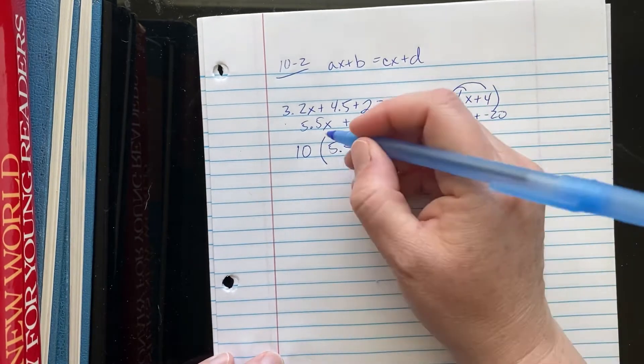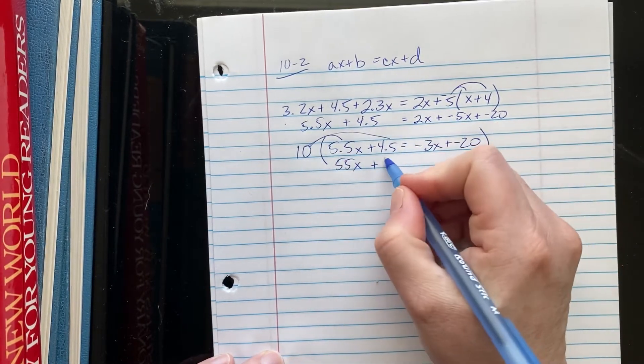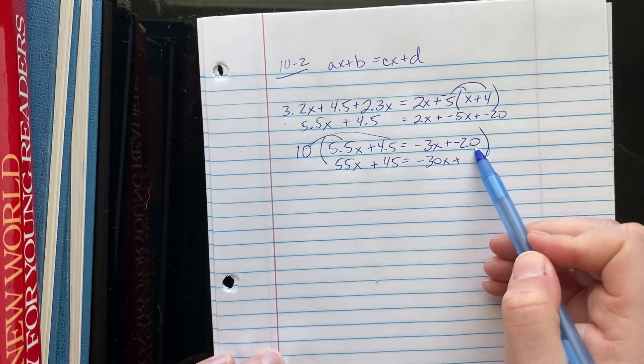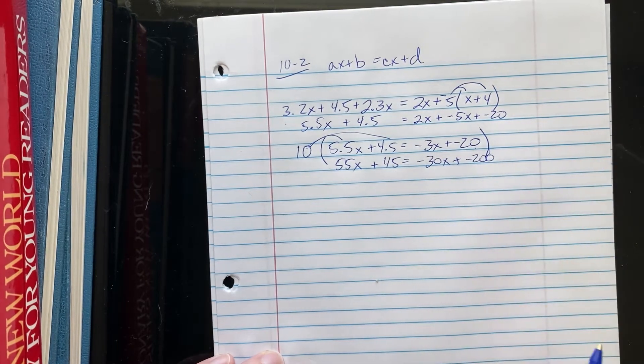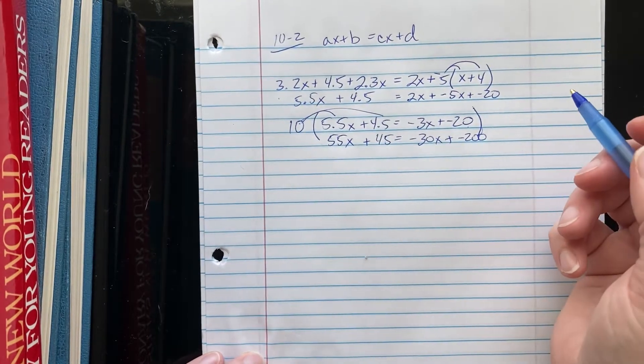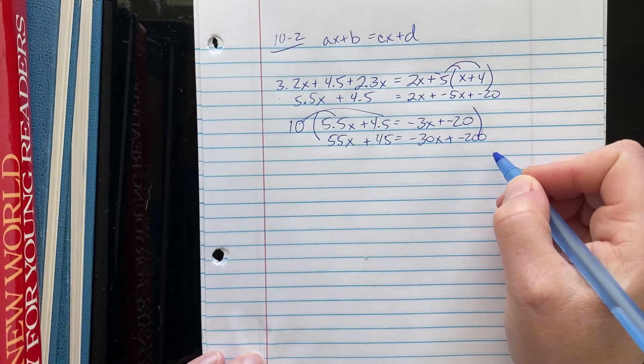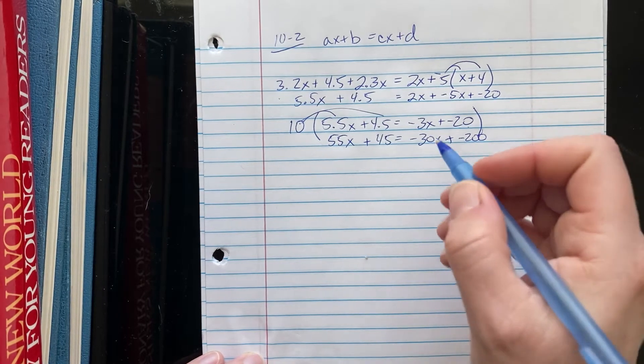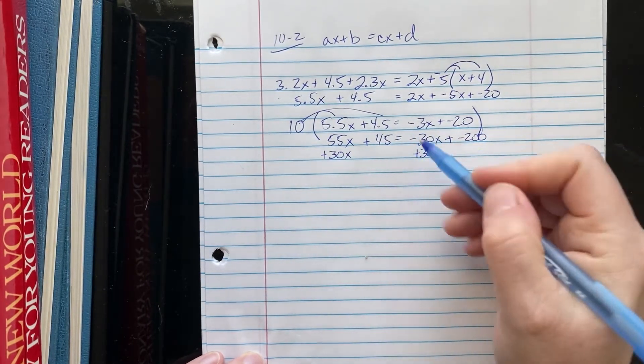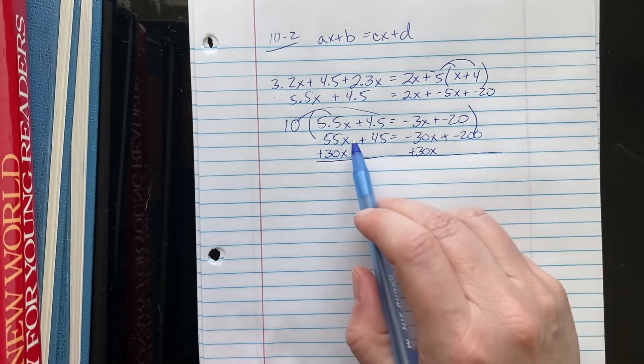We've really never worked across the equal sign like this before. So 5 and a half times 10, I'm going to get 55X plus 45 equals 10 times negative 3, negative 30X, plus 10 times negative 20 is negative 200. Well, now I can go through my equation solving process. Let's see here. I'm going to add 30X, but subtracting the negatives, I don't know if I want to do that. I guess I can. Let's add 30 and add 30. Now, that might not have been your choice. You might want to work with the constants first. Remember, yesterday we talked about you do it any way you want to.